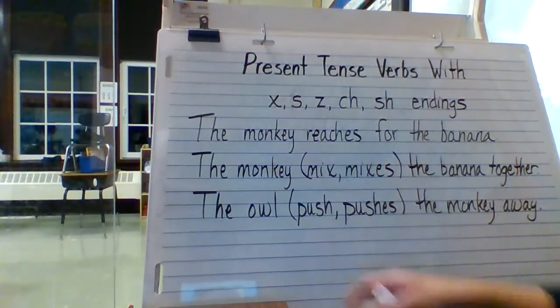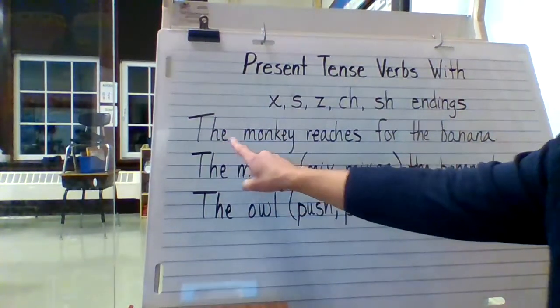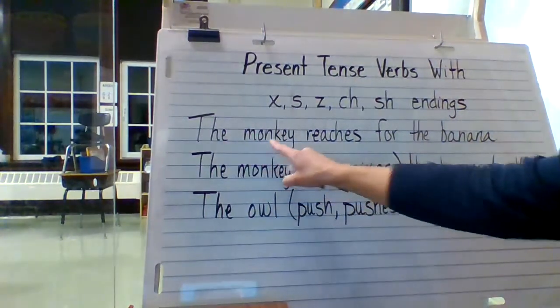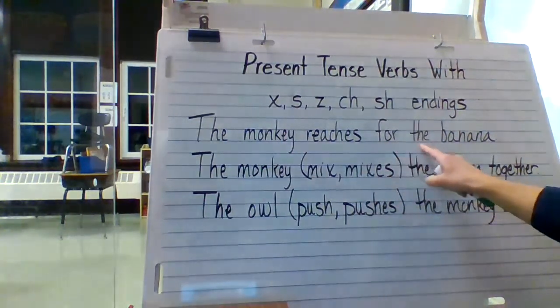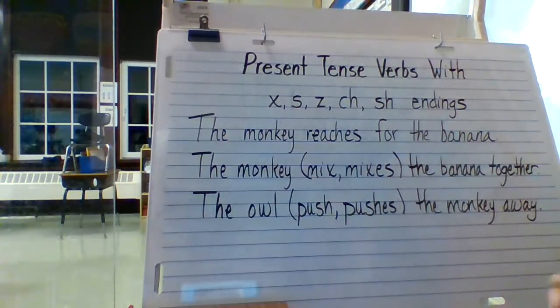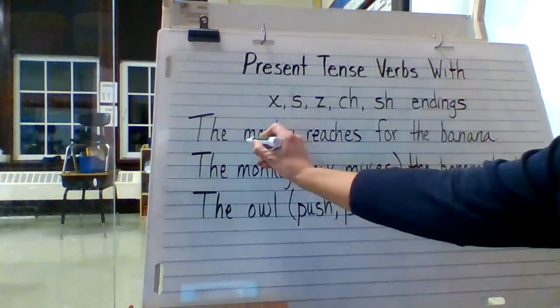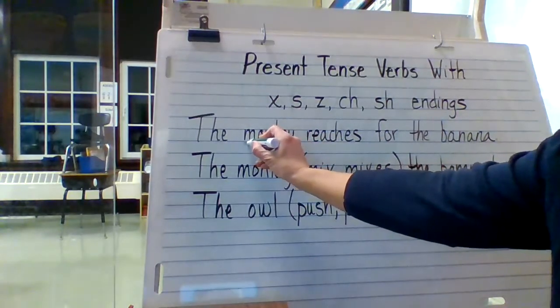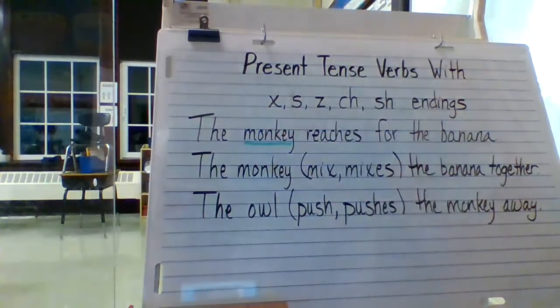For example, we have this sentence: the monkey reaches for the banana. So we know that our sentence has a singular subject — one subject — monkey.